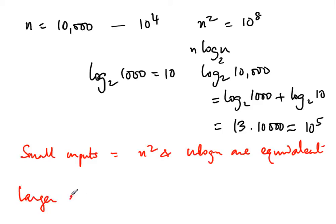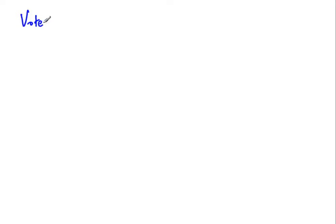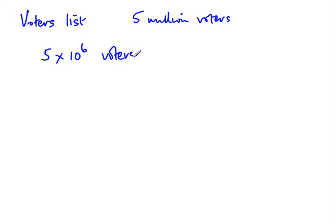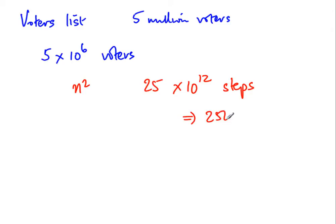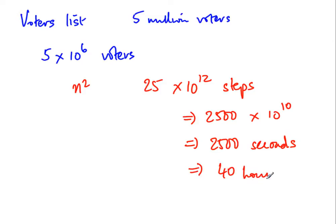What about a larger example — one that reflects real-life data? Consider a voters list: enumerators go door to door collecting all voters in a large city, say 5 million voters, and we have to publish the list in a reasonable sorted order. With 5 times 10 to the 6 voters, an n squared algorithm takes 25 times 10 to the 12 steps. Assuming 10 to the 10 operations per second, that is 2500 seconds — roughly 40 hours.